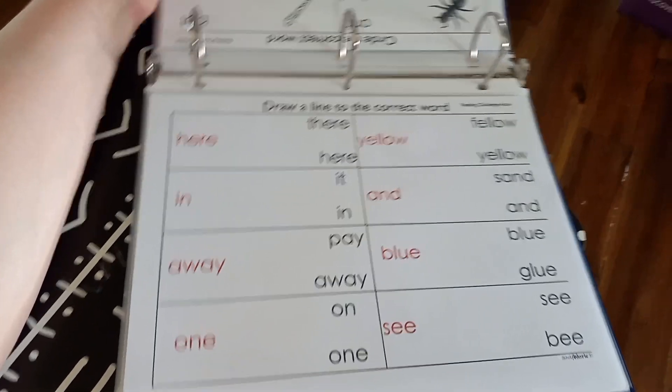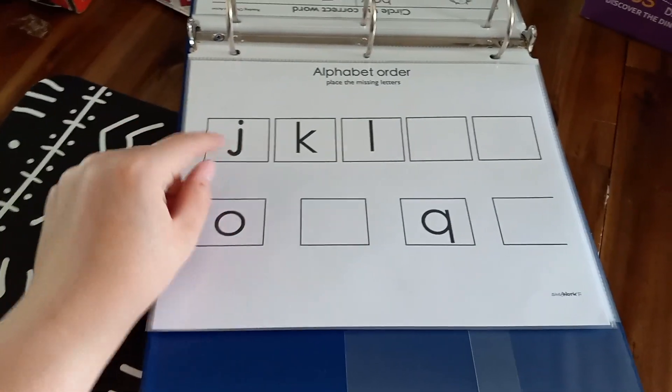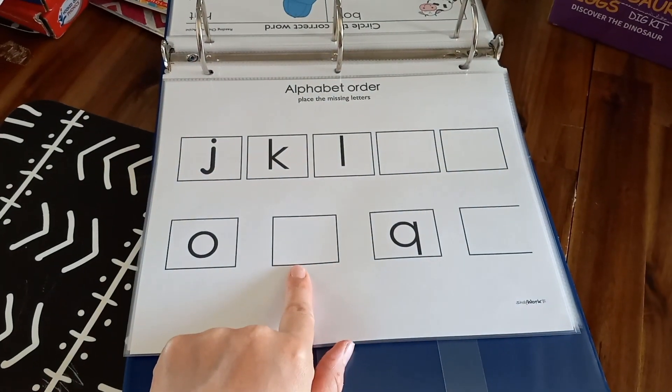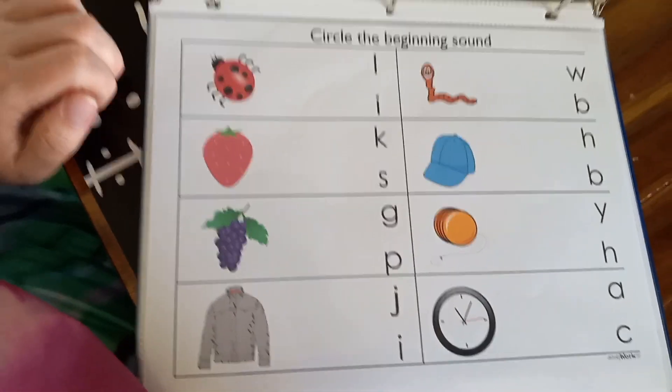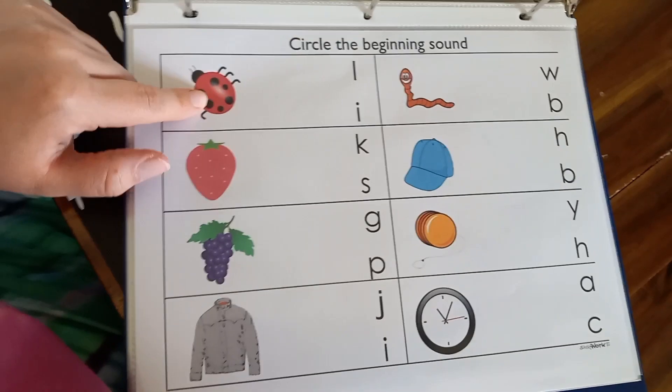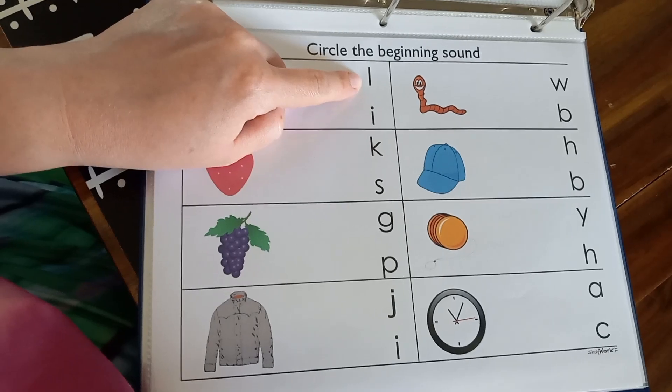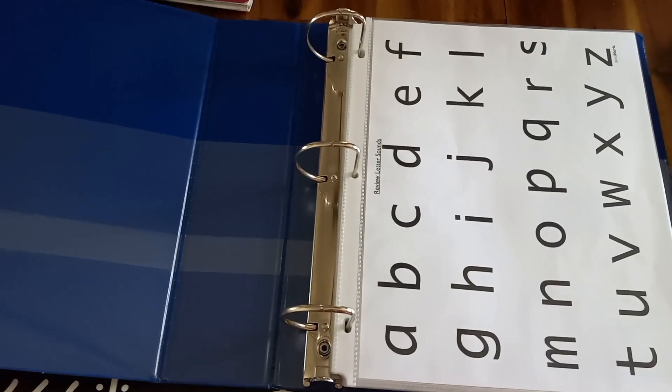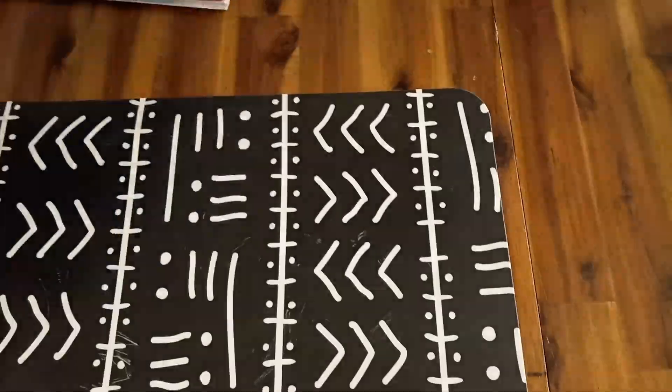Some words you draw a line to the correct word. Or you draw a line from the picture to the word. Alphabet order where the child places, we have little cards, and they place the missing letter in the alphabet. And circle the beginning sound. And you can also, when you circle the beginning sound, you could even just do a manipulative. Like if you don't want to have them circle. Ladybug, L, ladybug. So they put a manipulative on the L or circle the L. And it does not require any writing. It's just circling, drawing lines, or using manipulatives.